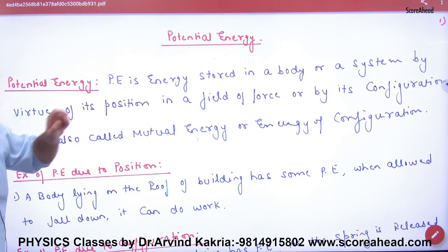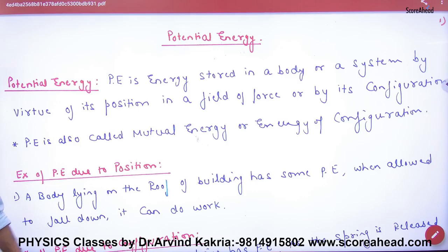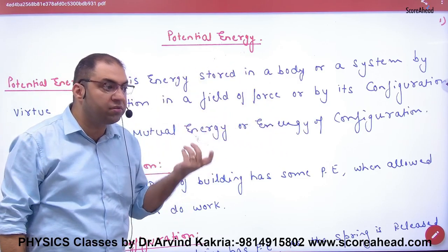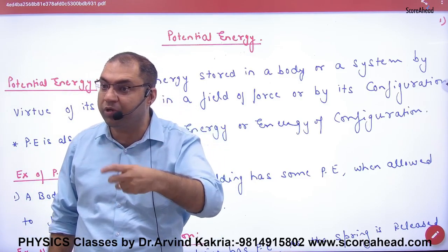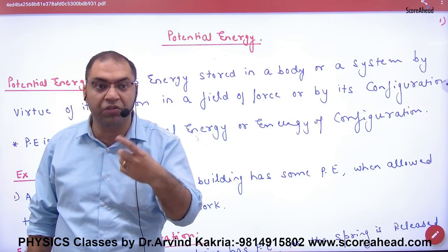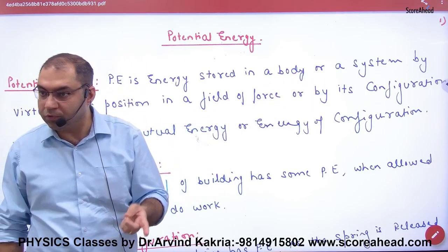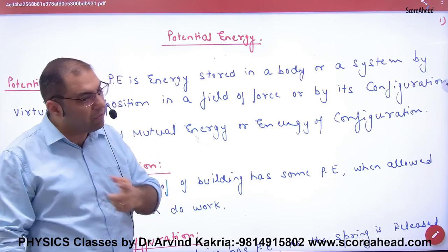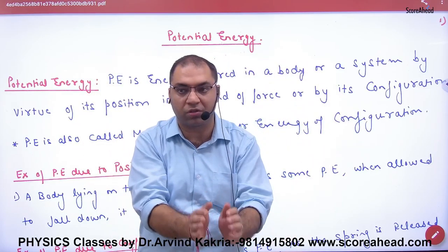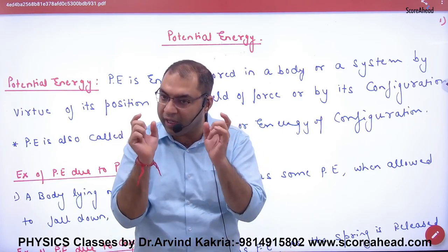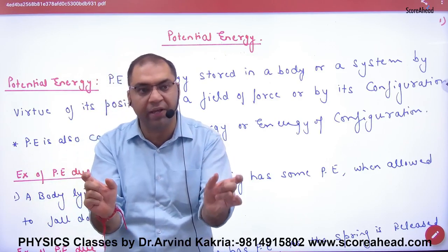The definition: energy stored in a body or a system by virtue of its position — position change — in a field of force, which is the gravitational field. Energy stored is called potential energy. By its configuration change, which means gravitational potential energy relates to position, and spring energy relates to configuration change. So one definition covers both types.